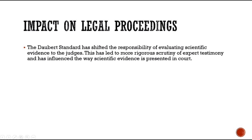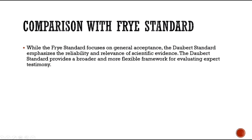Nowadays the Daubert standard is more flexible compared to the Frye standard, as it has several criteria — unlike the Frye standard which focuses only on the theory of general acceptance. The Daubert standard focuses on many things together: testability, peer review, error rates, and general acceptance. These are all criteria used to evaluate scientific validity, so nowadays the Daubert standard is more acceptable.